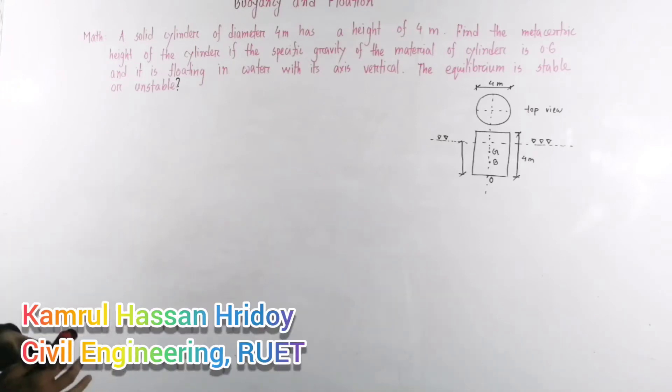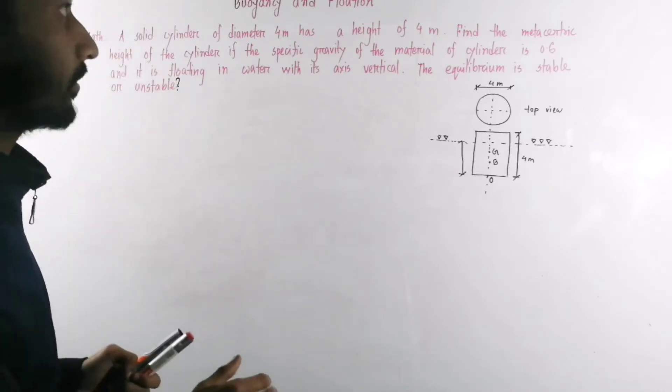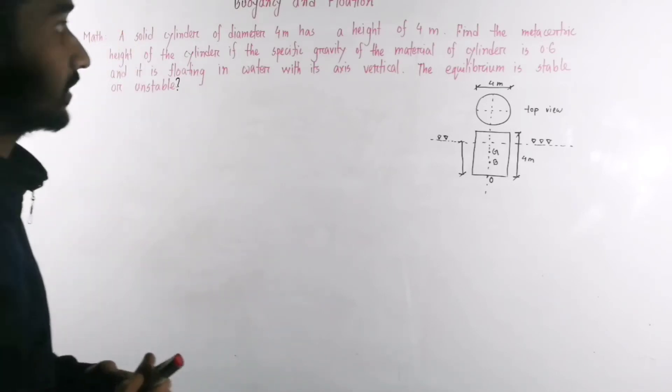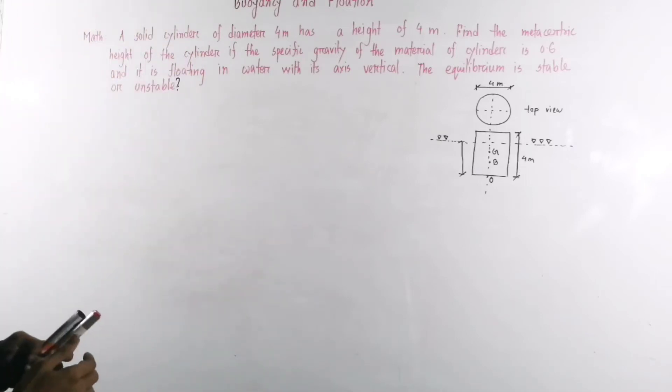I am talking about this: a solid cylinder of diameter 4 meter has a height of 4 meter. Find the metacentric height of the cylinder if the specific gravity of the material of cylinder is 0.6 and it is floating in water with its axis vertical.